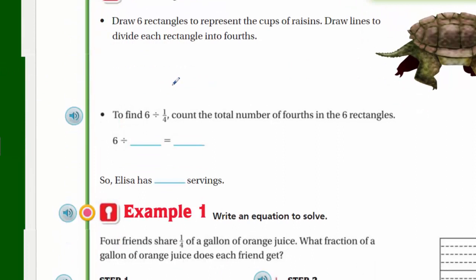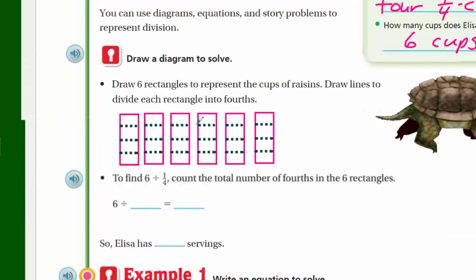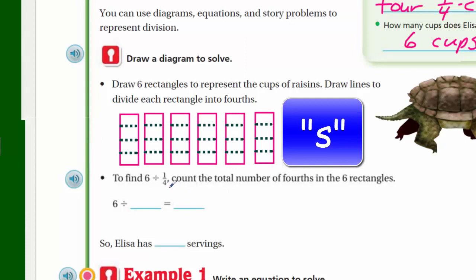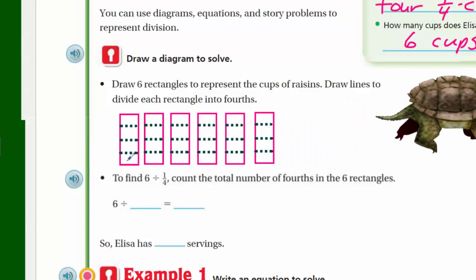Draw a diagram to solve. All right, let's go ahead and do that. It says, draw six rectangles to represent the number of raisins, draw lines to divide each rectangle into fourths. All right, I'm going to go ahead and do that right now. There we go, we have our six rectangles and I've already divided them into fourths because we were wanting to have quarter cups. And we show that there's one, two, three, four quarter cups in one cup.